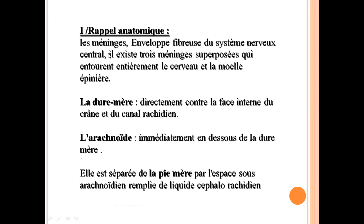Rappel anatomique. Les méninges sont les enveloppes fibreuses du système nerveux central. Il existe trois méninges superposées qui entourent entièrement le cerveau et la moelle épinière. Il y a la dure-mère, directement contre la face interne du crâne et du canal rachidien. L'arachnoïde, immédiatement en dessous de la dure-mère, est séparée de la pie-mère par l'espace sous-arachnoïdien rempli de liquide céphalo-rachidien. Le liquide céphalo-rachidien est très bien protégé. Normalement, il n'y a pas d'accès de bactéries et de virus au LCR, qui est donc normalement stérile.